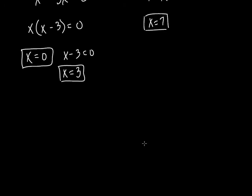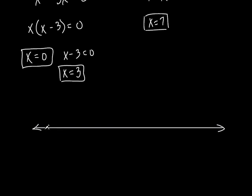What are we going to do with those three numbers? Put them on a number line. Put them in chronological order. What's my smallest number? 0. Then the next would be 3, and the next would be 7. Now this is very helpful, because how many different areas or sections do I have? I've got 1, 2, 3, 4 different sections.